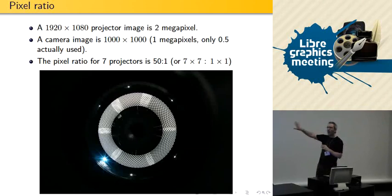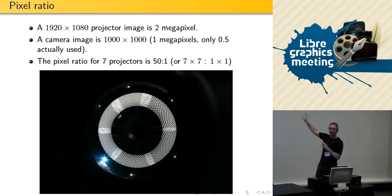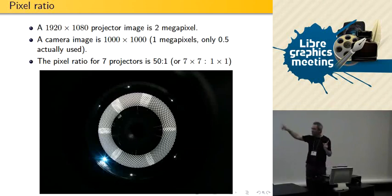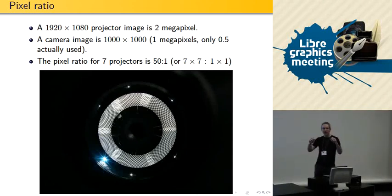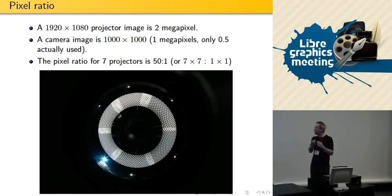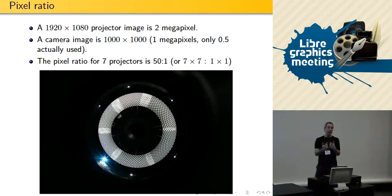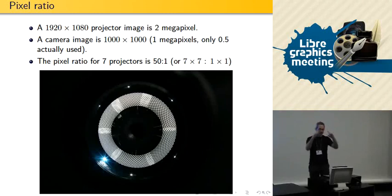One point to make: a projector which is HD has two megapixels per image, but the camera that looks at the screen must see seven projectors at a time. So this is about 50 projector pixels for one camera pixel. That's what we call the pixel ratio problem — 50 to one means about a seven-by-seven pixel square, so the camera should be as high-resolution as you can get.